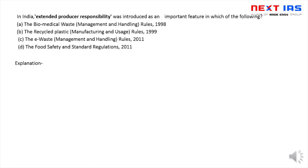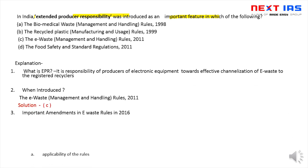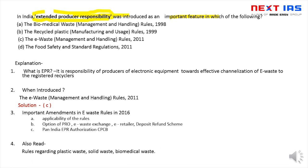Our first question: In India, Extended Producer Responsibility (EPR) was introduced as an important feature in which of the following? चार options दिए गए हैं — EPR कब introduced हुई? EPR basically responsibility है producer की कि कोई भी electric/electronic equipment जब अपना life cycle complete कर ले, तो उसको registered recycler तक channelize करना। EPR was introduced in 2011 under E-Waste Management and Handling Rules 2011. So the correct option is C.